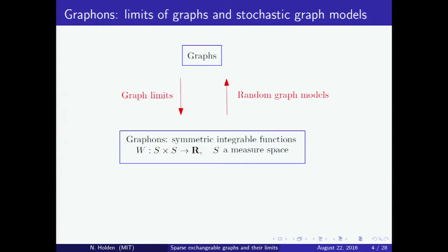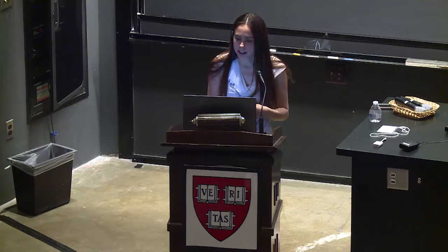Graphons are symmetric integrable functions defined on the product of some measure space with itself. A graphon can be used to generate random graphs — it may be viewed as a model for a random graph. Graphons can also be used to study convergence of graphs. If we have a convergent sequence of real numbers, the limit is a real number. If we have a convergent sequence of graphs, the limit is a graphon.